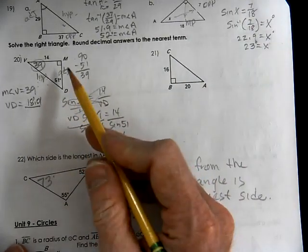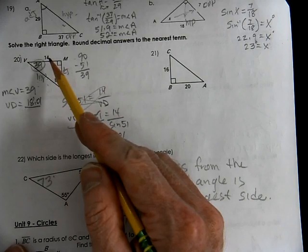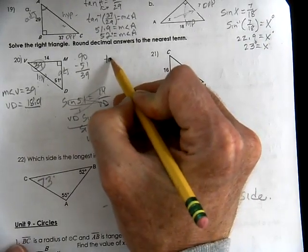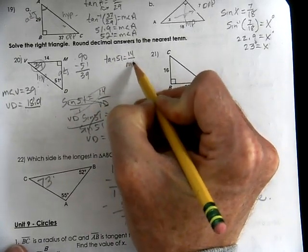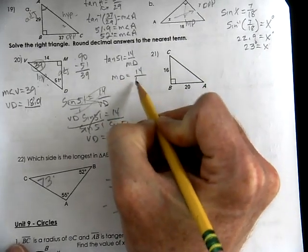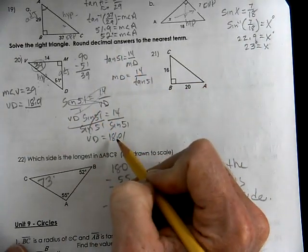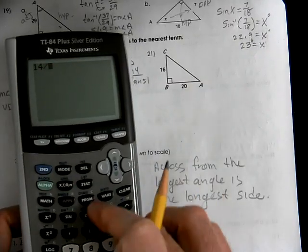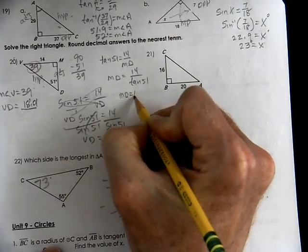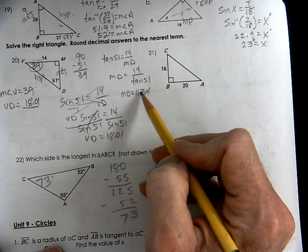To find side MD, we use opposite over adjacent — that's tangent. Tangent of 51° equals 14 over MD. Rearranging, MD = 14 divided by tangent of 51° = 11.34. You could also use the Pythagorean theorem. Rounded to the nearest tenth, VD = 18.0 and MD = 11.3.